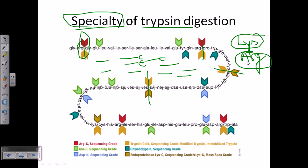An important caveat: trypsin cleaves well after lysine and arginine, but if there is a glutamic acid or aspartic acid — negatively charged residues — right after the cleavage site, digestion becomes less efficient. And if there is a proline next to arginine or lysine, the ability to digest is essentially zero. For example, if we have arginine followed by proline, trypsin cannot digest at that point. Proline creates steric hindrance for the digestion. This is the only exception of tryptic digestion.